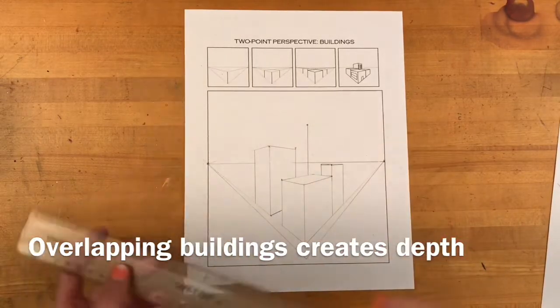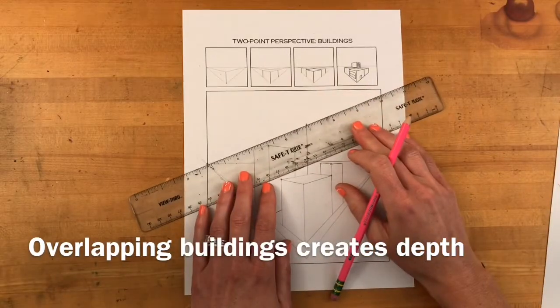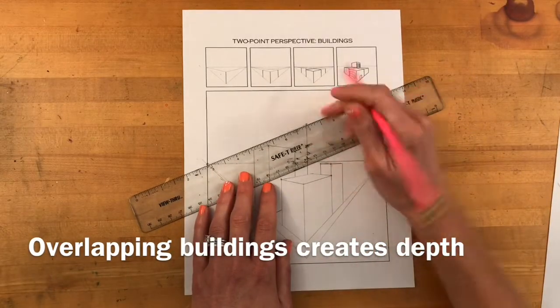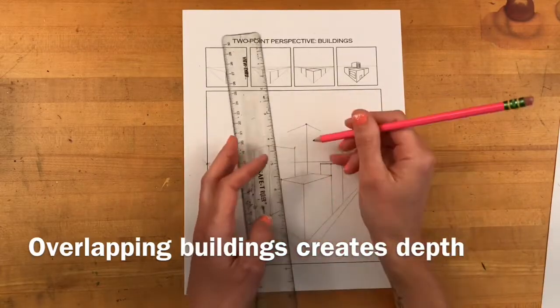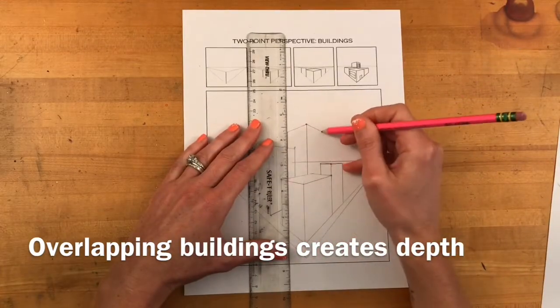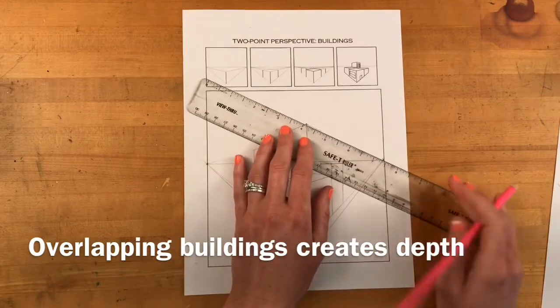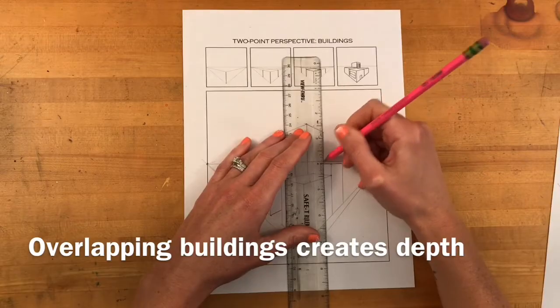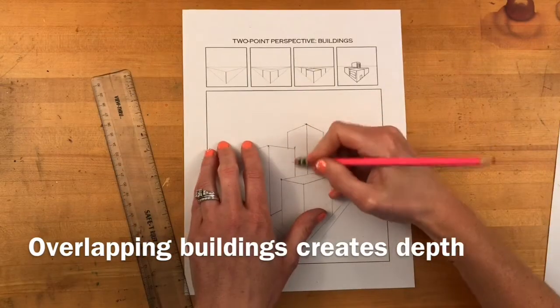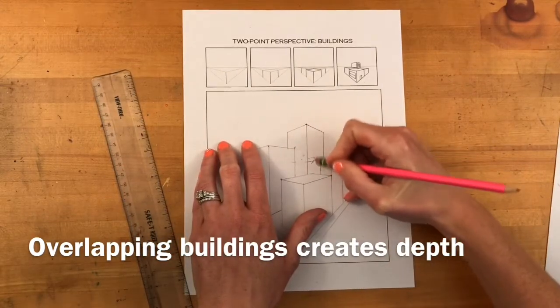Something else to consider is that overlapping buildings will create more depth. So by placing a building behind these other buildings, I'm able to make it look like I have a very tall building very far away. Since this building crosses far above the horizon line, I'm only needing to draw two sides of the building. There's no rooftop that could be seen.